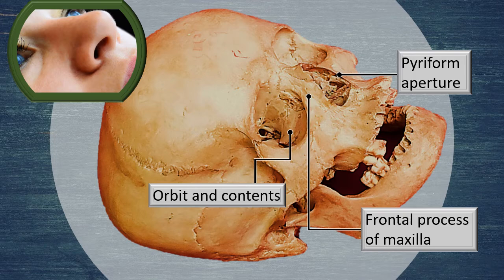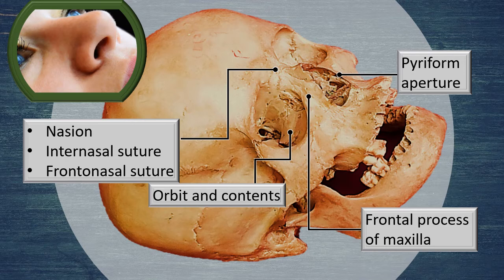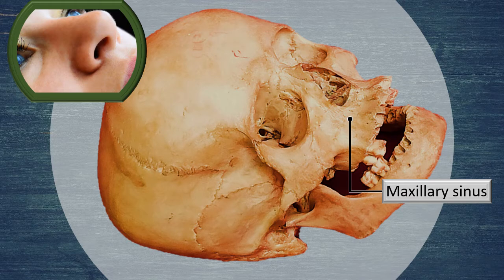More lateral to the frontal process of the maxilla is the orbit and its contents. A particularly important landmark is visible just one or two millimeters above the bridge of the nose: the nasion. The nasion is the junction between the vertical internasal suture and the horizontal frontonasal suture — three sutures meeting at a single point. About a centimeter above the nasion is the glabella, a prominent location on the frontal bone.